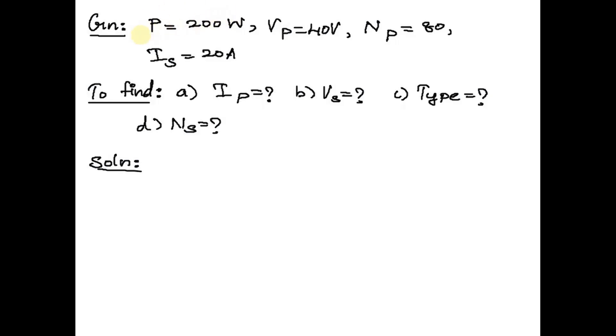Hi students! An ideal transformer with power input of 200 Watts is considered. The primary voltage and the number of turns in the primary coil are given.